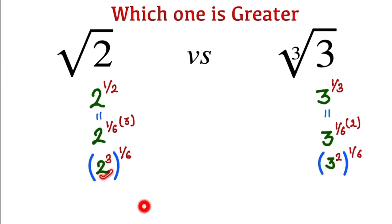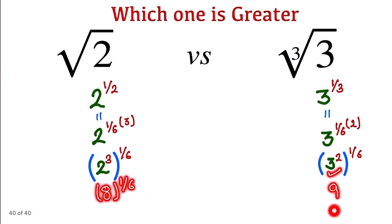So here 2 to the power 3 is equal to 8, and the whole power is 1/6. And here 3 squared is 9, the whole power is 1/6. So here we look at the base: this one is 8 and this one is 9. Both are different.